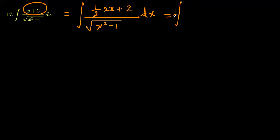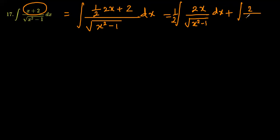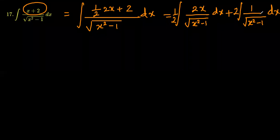The constant one half can be taken outside the integral sign, giving us the integral of 2x divided by square root of x squared minus 1, plus the integral of 2 divided by square root of x squared minus 1 dx. The constant 2 can also be taken outside the integral sign.